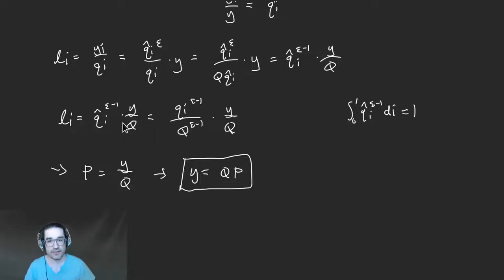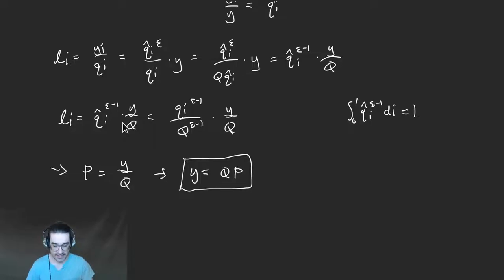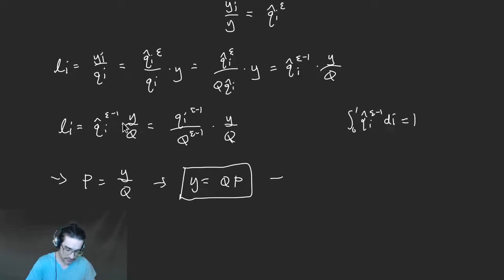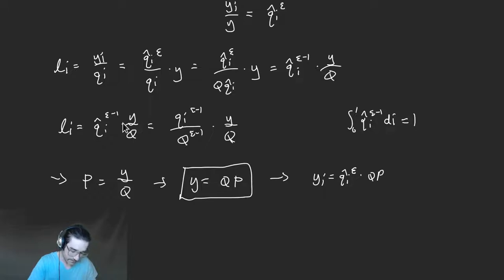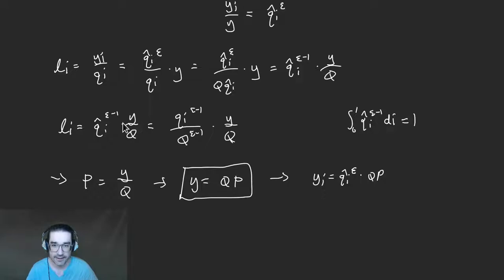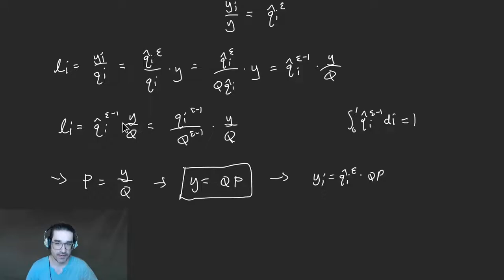That means Y equals Q times P — remarkably simple for all of that work. Y is the amount of production labor times Q, your aggregate productivity index. From here you can concretely say Y_i equals Q-hat_i to the epsilon times Q times P. So we know the wage, we know output — we know all the Y_i's. We're ready to move forward to the free entry condition.